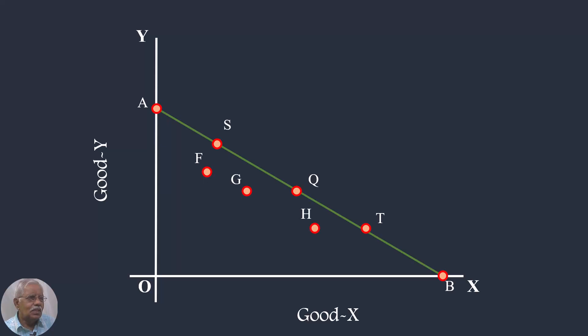Using the price line, we shall try to understand the assumptions of the Revealed Preference Theory. For the sake of convenience, we shall categorize the assumptions as explicit assumptions and implicit assumptions.